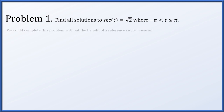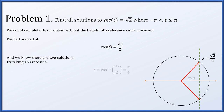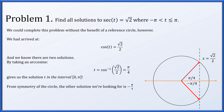There is another way to do this problem without using a reference circle. We want cosine of t to be root 2 over 2, so we draw x equals root 2 over 2 and see it intersects the circle twice. Taking an arc cosine gives t equals arc cosine of root 2 over 2, which equals pi over 4. Since arc cosine has range from 0 to pi, this is the quadrant 1 solution. By symmetry, minus pi over 4 is the corresponding downward rotation, giving us again the two solutions plus or minus pi over 4.